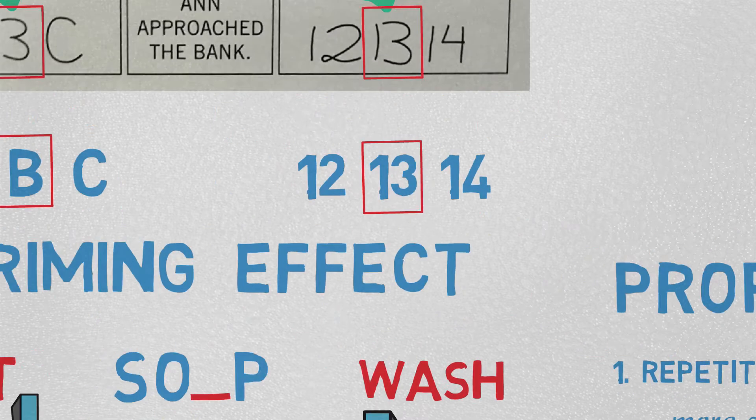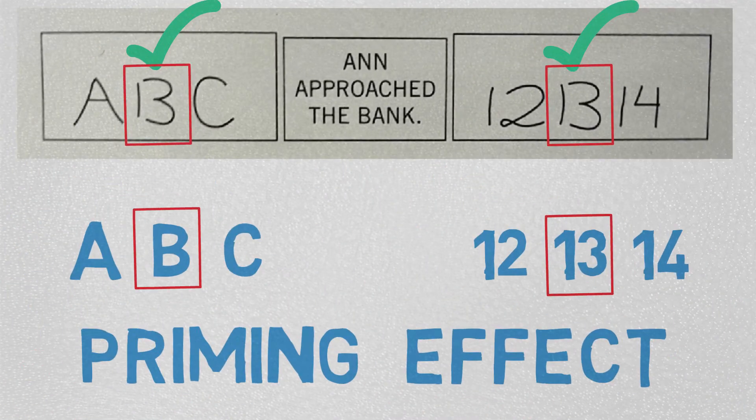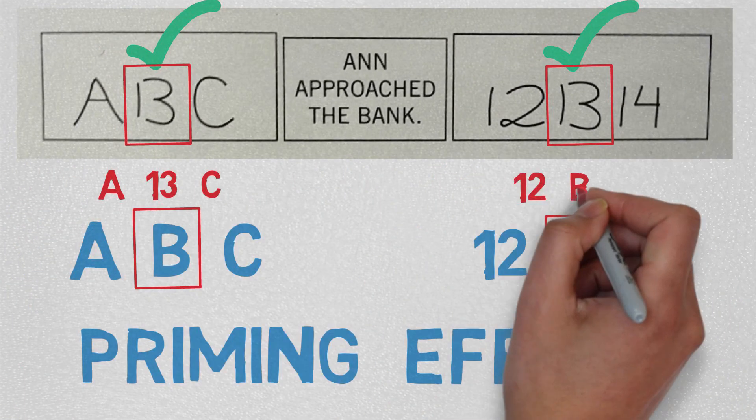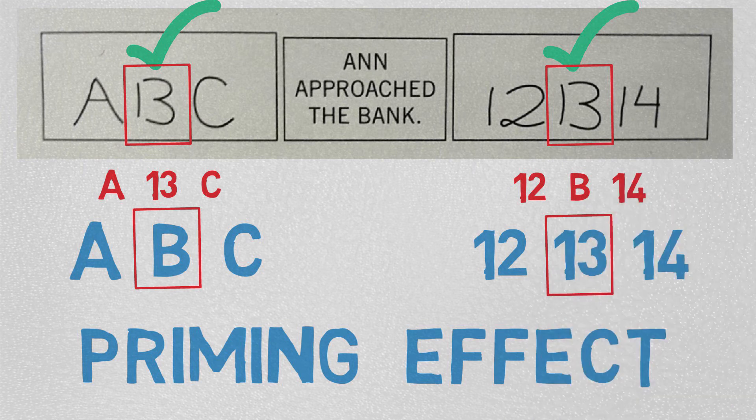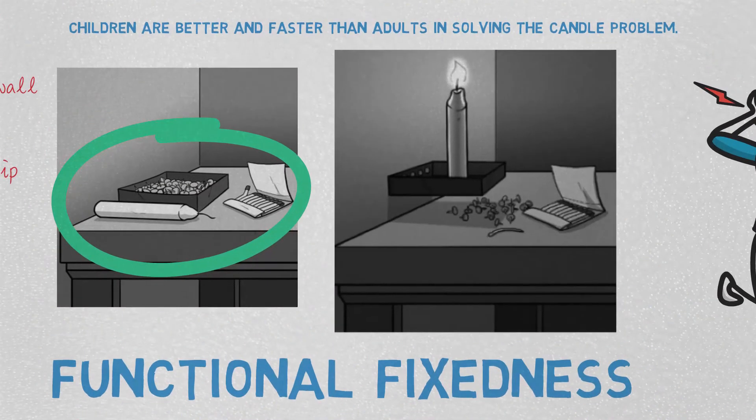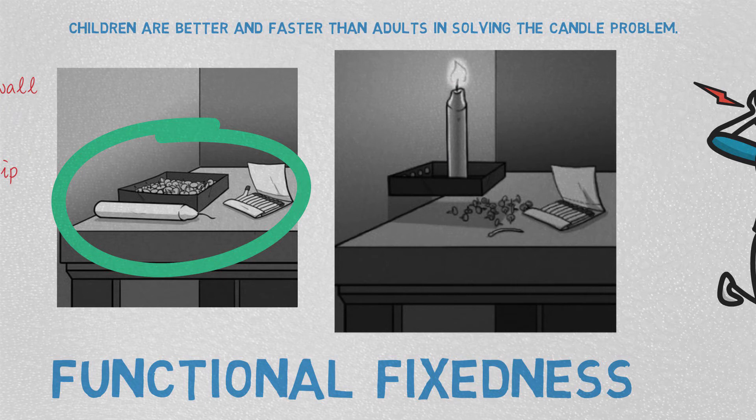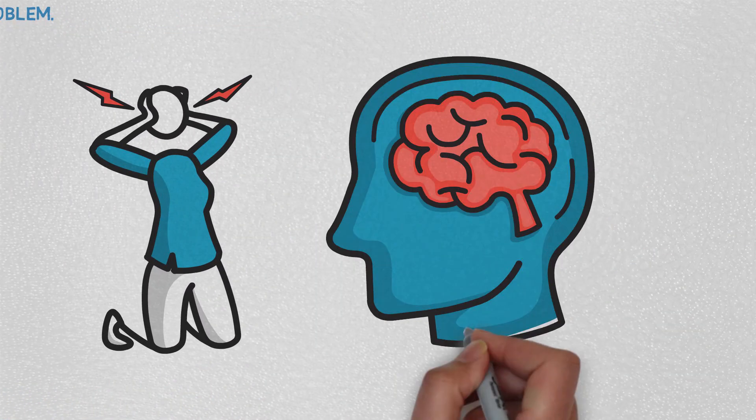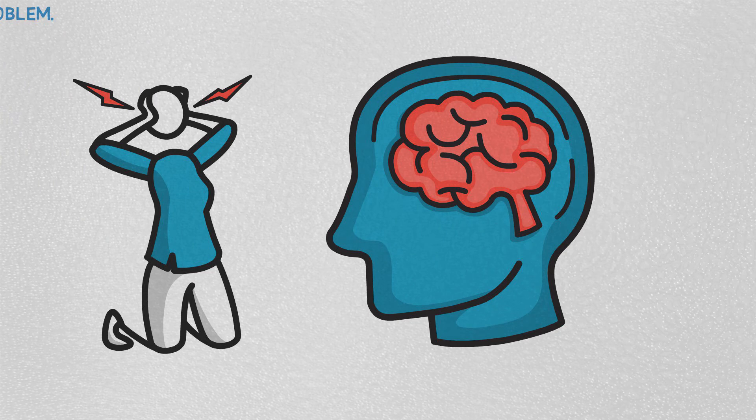You always read ABC and 12, 13, 14—always, never A, 13, C or 12, B, 14. Your experience told you subconsciously what the second item in each box should be. Similarly, your past experience of problem solving shaped your brain on the function of each item. As you grow older, our brains are hardwired to respond in a specific manner for a specific stimulus.